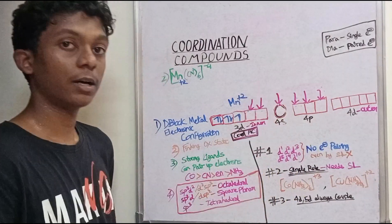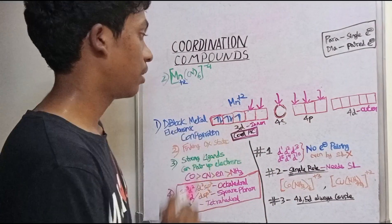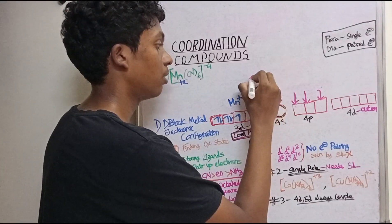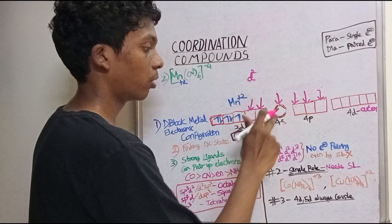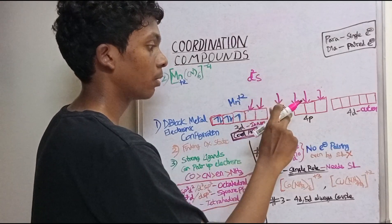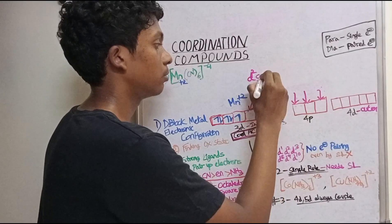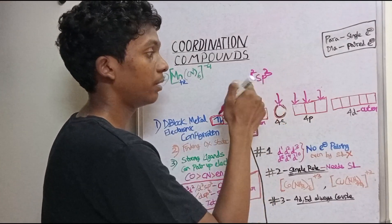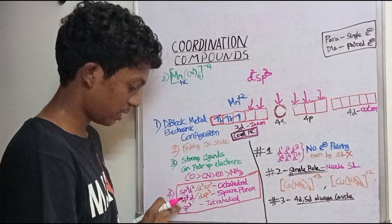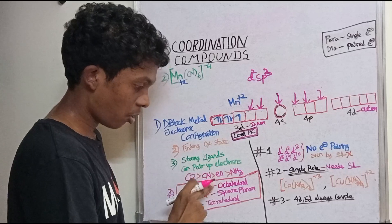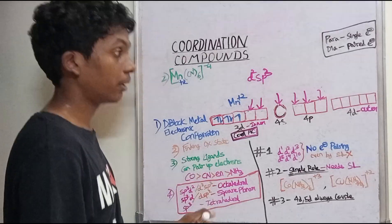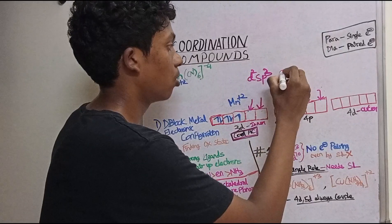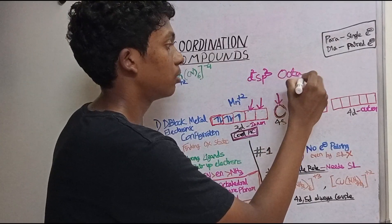We will use two d orbitals. So the hybridization is: 2 d-orbitals, 1 s-orbital, and 3 p-orbitals — giving d²sp³. d²sp³ is octahedral geometry.